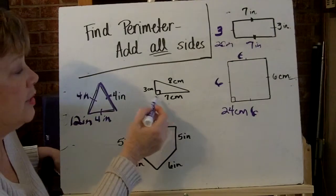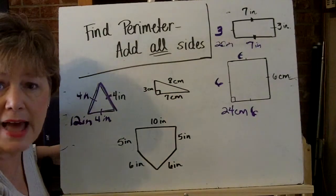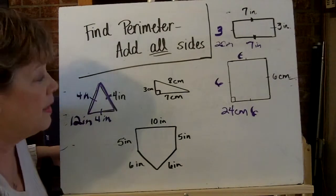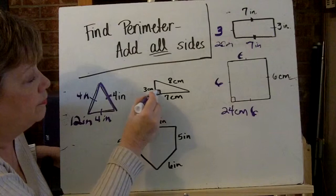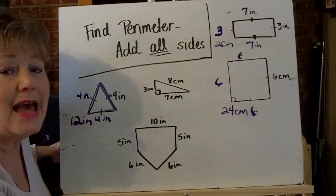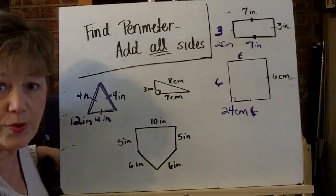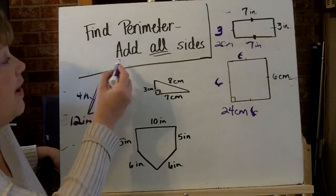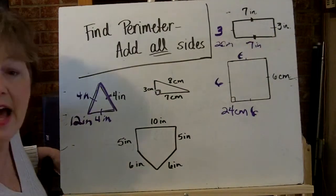Now this triangle doesn't have any little dash marks. So it's clear that my sides have different measurements. This marking right here tells me it's a right angle. But I don't need that for this particular measurement. But I just wanted you to be able to be reminded what that meant.